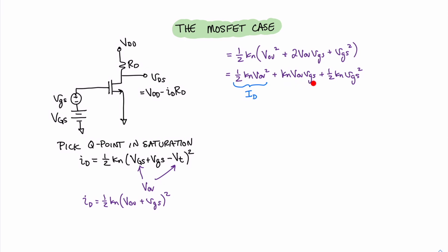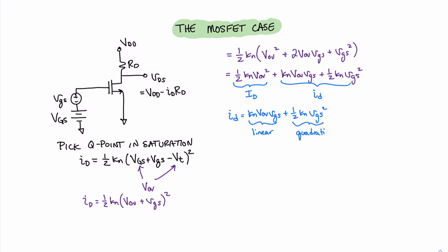Looking at the second two terms, KN·VOV·little VGS and one half KN·little VGS squared, we recognize that because we have the little VGSs in here, these two terms are our small signal terms. The first term is linear because it doesn't have a square on VGS, and the second term is a square or nonlinear term. So little id equals KN·VOV·VGS plus one half KN·VGS squared. The second term represents a potential for distortion in our signal. Therefore, we want this first linear term to dominate the second term.